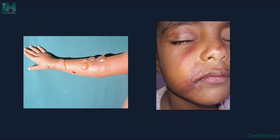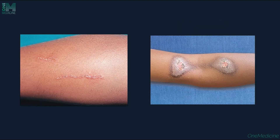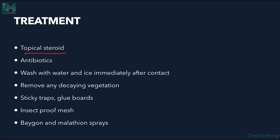These are the blisters seen on the fingers and hand. This is the eczematous reaction due to Paederus dermatitis, here on the arm. This is the classical kissing lesion seen in the flexors of the elbow joint. Treatment is with topical steroids and antibiotics. Immediately after contact, the area should be washed with water. Removing any decaying vegetation is important as the beetles grow there. Sticky traps, glue boards, insect-proof mesh, and malathion sprays will also help.